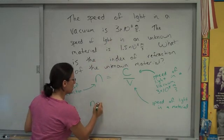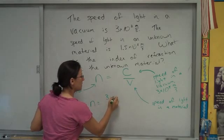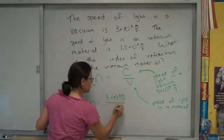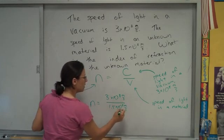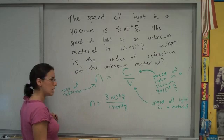We can look for that ratio of 3 times 10 to the 8, the speed of light in a vacuum, to 1.5 times 10 to the 8, the speed of light in a material. It's half as slow in that material.